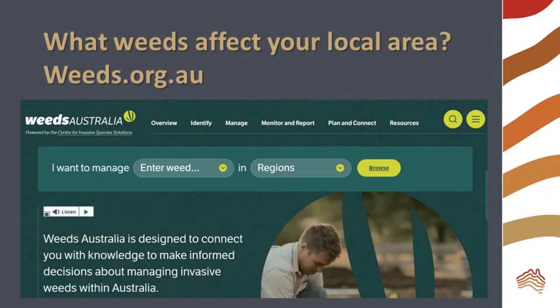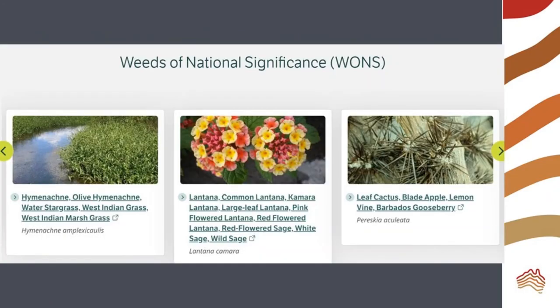To learn more about weeds in your local area, go to weeds.org.au. Your local council may also have information on common pest species in your area. If you find a weed of national significance, be sure to report this to your local council.